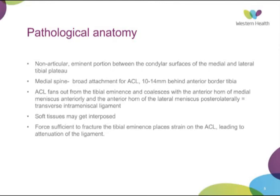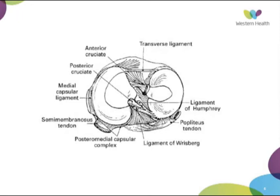If the force is sufficient to fracture the tibial eminence, it places strain on the ACL and can lead to attenuation of the ligament, but rarely rupture. Looking at the anatomy of the tibial plateau itself, we have our medial and lateral meniscus and the transverse intermeniscal ligament. The tibial eminence is underneath, with the ACL here — and it's the anterior horns of the meniscus and this ligament that can get interposed in the fracture fragment.